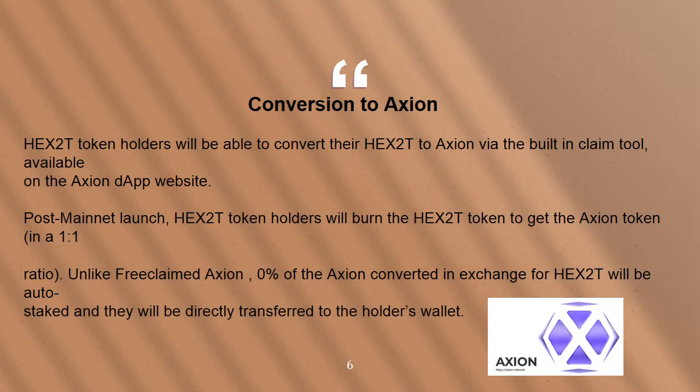Conversion to Axion. HEX 2T token holders will be able to convert their HEX 2T to Axion via the built-in claim tool available on the Axion DApp website. Post mainnet launch, HEX 2T token holders will burn the HEX 2T token to get the Axion token in a 1-to-1 ratio. Unlike free claimed Axion, 0% of the Axion converted in exchange for HEX 2T will be auto-staked; they will be directly transferred to the holder's wallet.